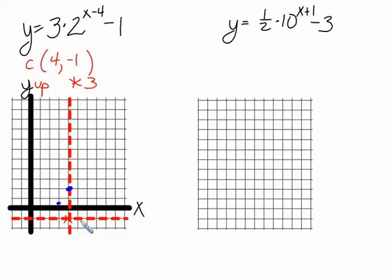And ordinarily, when we go right 1, it would be up 2. But we're multiplying it by 3, so it will be up 6.